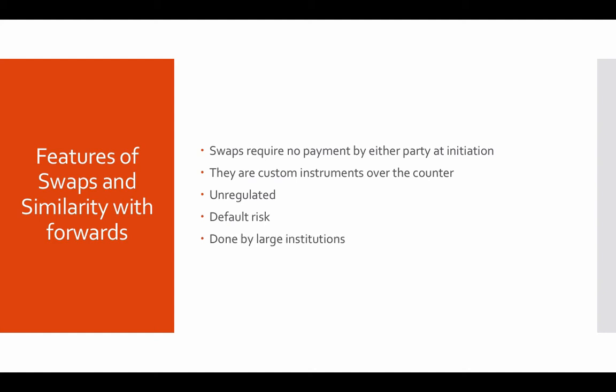Swaps are done by large institutions. Generally, an ordinary person wouldn't do a swap because the objective is to cover a long-standing series of payments in a beneficial manner. Swaps are actually some of the most complicated derivatives present, and due to complexity and the strategic positions taken by large institutions, they are mostly done by large institutions — not that smaller players are barred, but it's mostly large institutions.